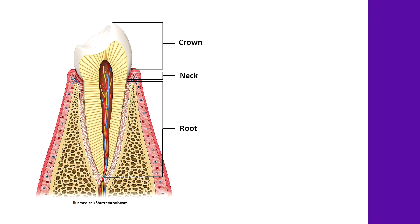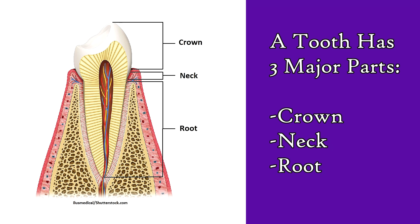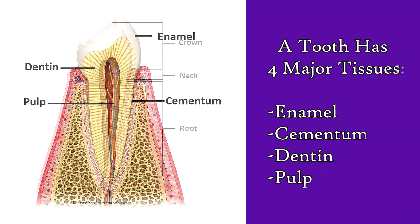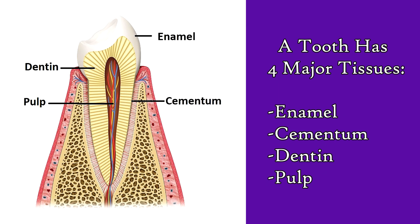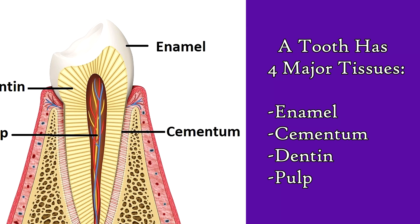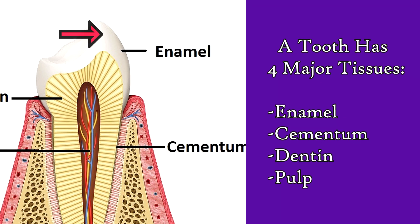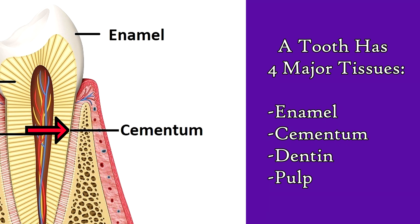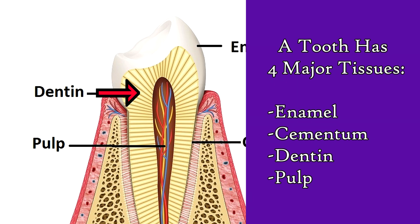So the teeth have those three major parts — crown, neck, and root — but these parts are comprised of four major tissue types: enamel, cementum, dentin, and pulp.